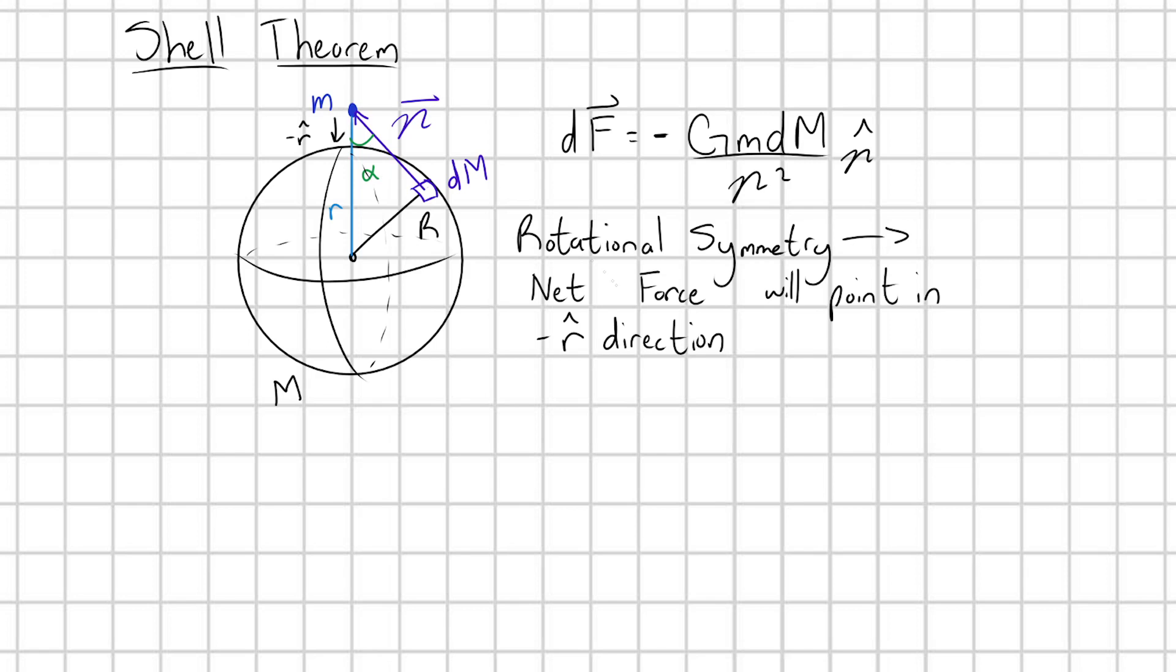In terms of this introduced angle alpha, that component is going to be minus gm dm over script r squared times cosine alpha. But what is cosine alpha? Introducing the polar coordinate theta and introducing this pink right triangle I'm showing now, we can see that the left leg of this pink triangle is going to be equal to little r minus capital R cosine theta. And so cosine alpha will be equal to that left leg, r minus R cosine theta, over the hypotenuse script r.